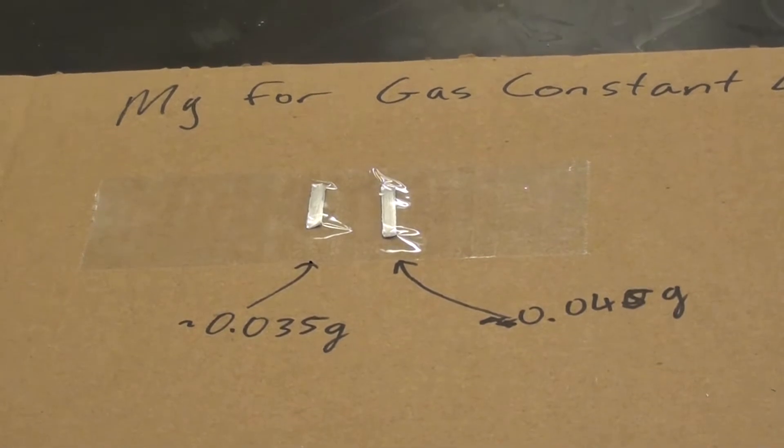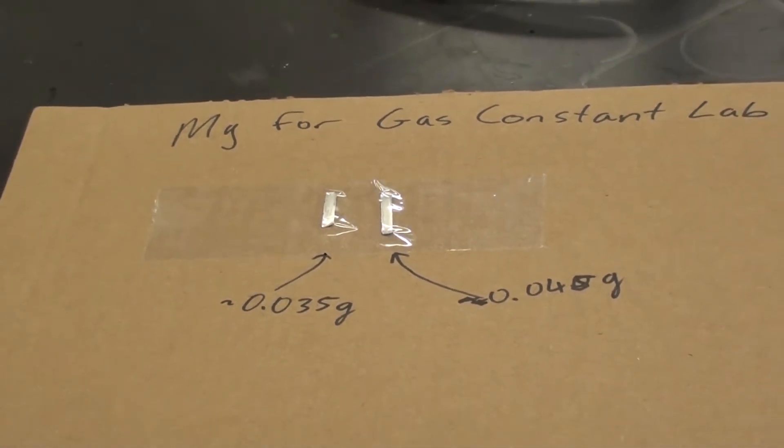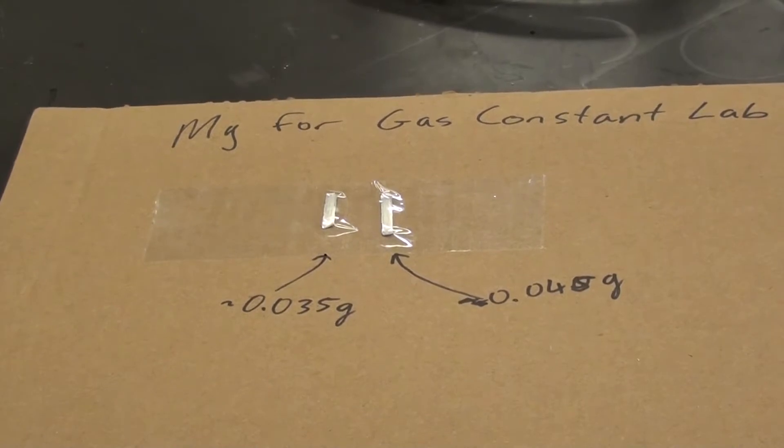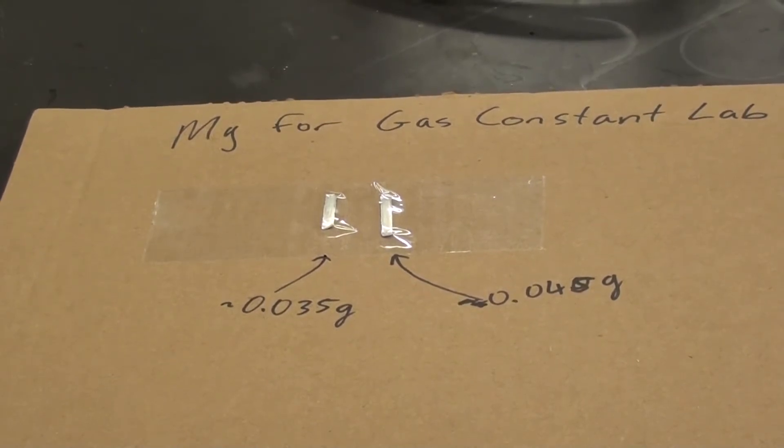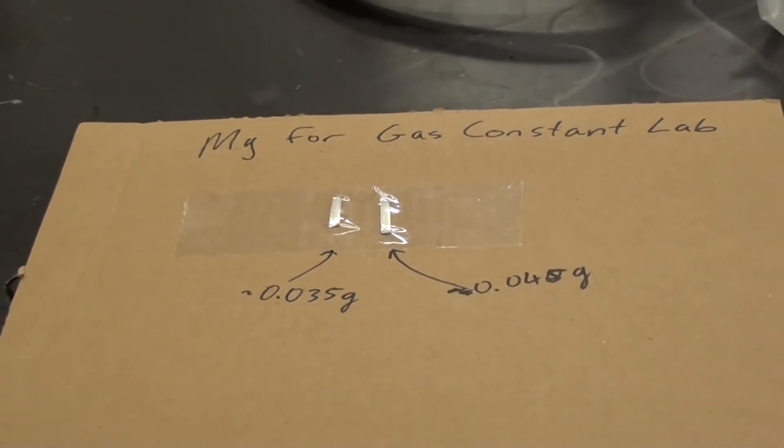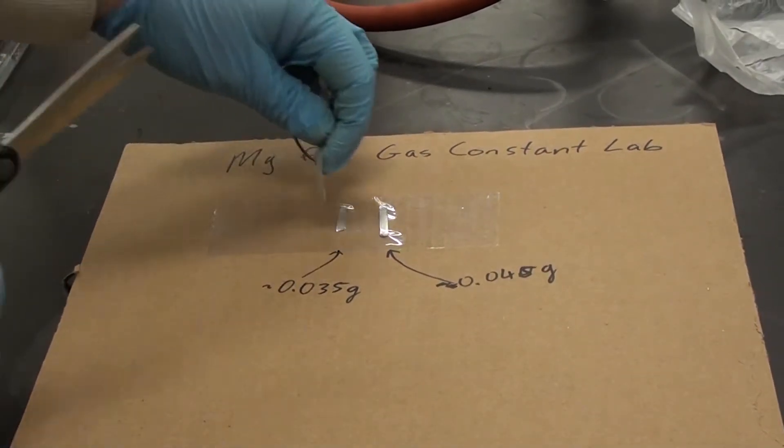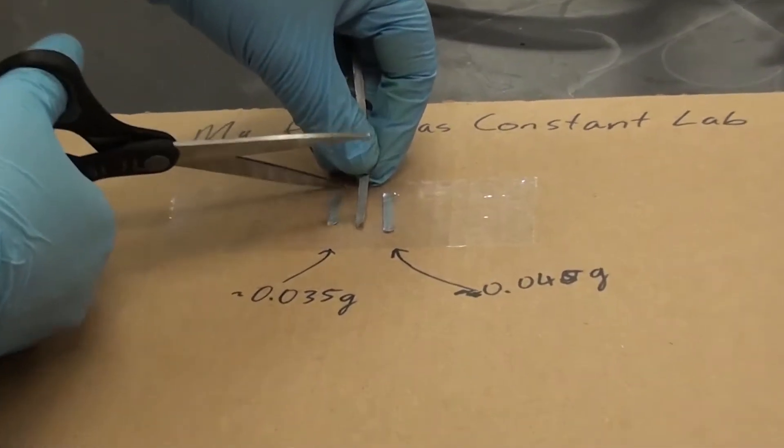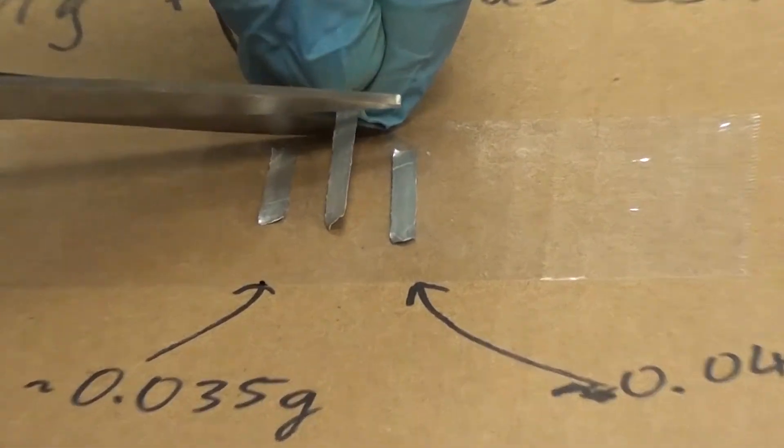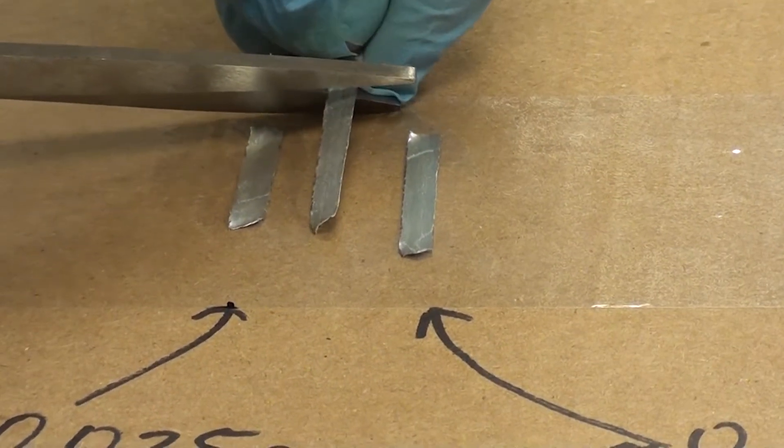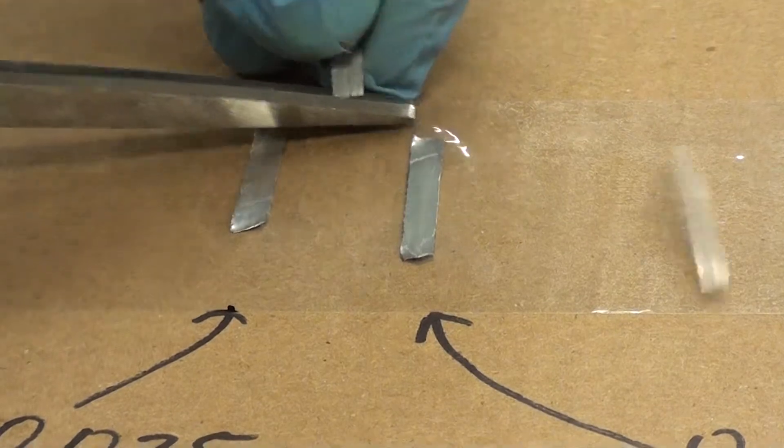Ideally somewhere in the 0.040 gram region. So I'm going to cut off a piece of magnesium that is about that length. I will use scissors here. You could just tear it with your fingers, but I think it's a bit easier or a bit more accurate using scissors. So I'm just going to cut a piece and hopefully it will be, whoops there we go.